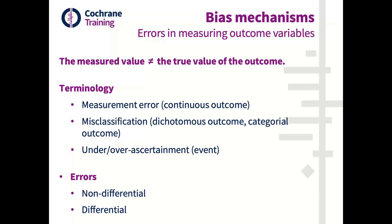Some terminology to clarify our wording: we talk about measurement error for continuous outcomes, misclassification for errors with dichotomous or categorical outcomes, and under- or over-ascertainment for an event. We have two types of errors: non-differential errors, which rarely provide issues related to bias, and differential errors, which raise concern for bias.